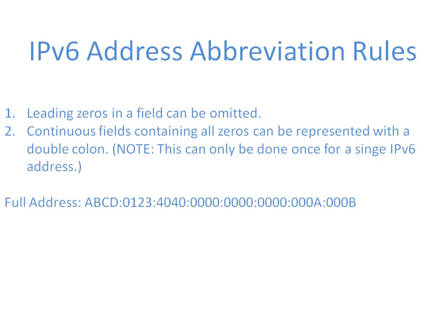Let's go through an abbreviation example. Starting with the full address: ABCD, colon, 0123 — we omit the leading zero, giving 123. Then 4040 — nothing to abbreviate there. Then we have three contiguous fields of all zeros, which we represent with a double colon. Then 000A — omit leading zeros to get just A. Then 000B — omit leading zeros to give just B. The abbreviated address looks like: ABCD:123:4040::A:B. This is a much more manageable, easily typed, and less error-prone address using these abbreviation rules.